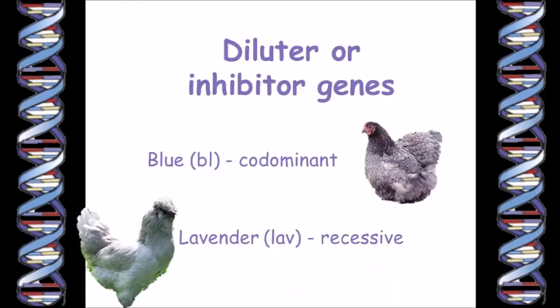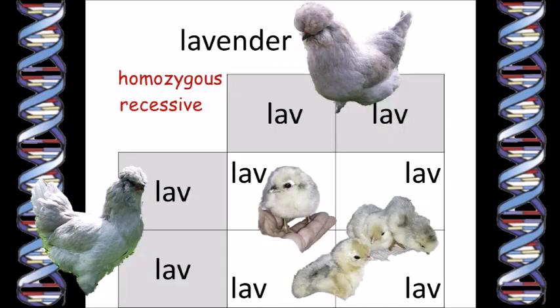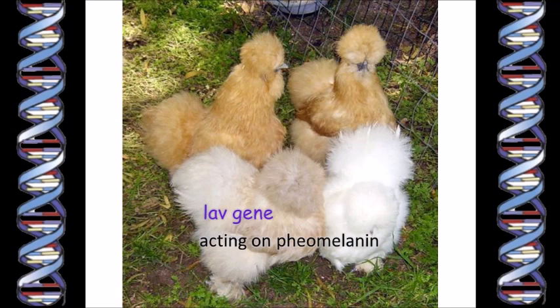The lavender gene is also a diluter gene, but it can act on both eumelanin and pheomelanin. The melanocytes in the feathers still produce the pigments, but the lavender gene inhibits the transfer of the pigment granules to the feather structure. When the feather would otherwise have been black, a double dose of the recessive lavender gene dilutes the black eumelanin color to lavender, which is a kind of gray. If the original pigment is pheomelanin, the lavender gene dilutes the basic buff brown to a pale straw or cream color.